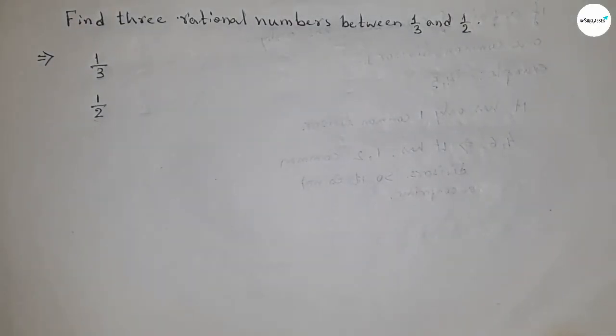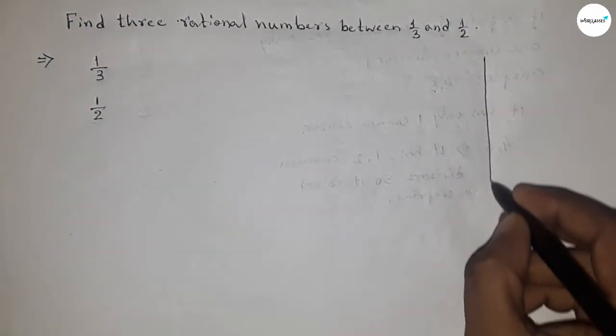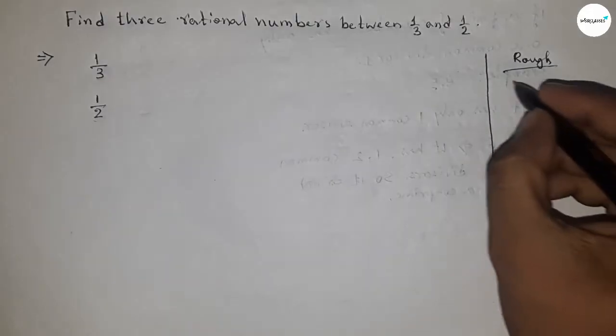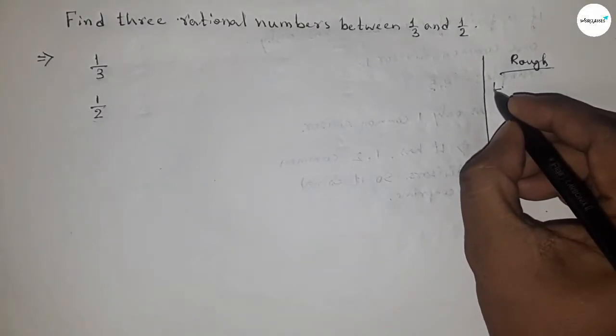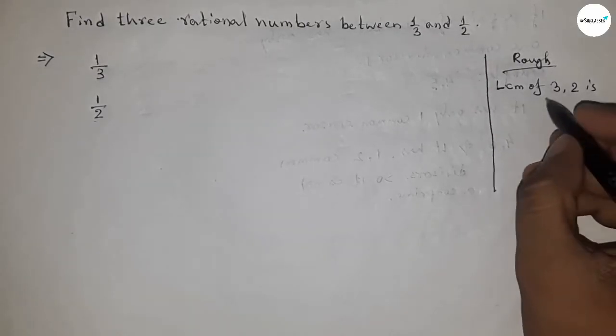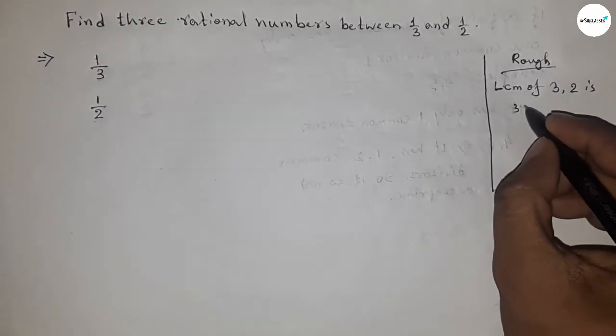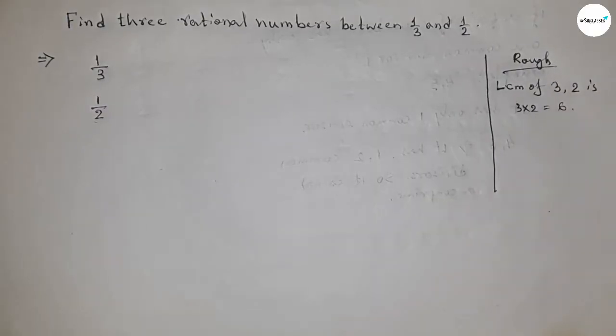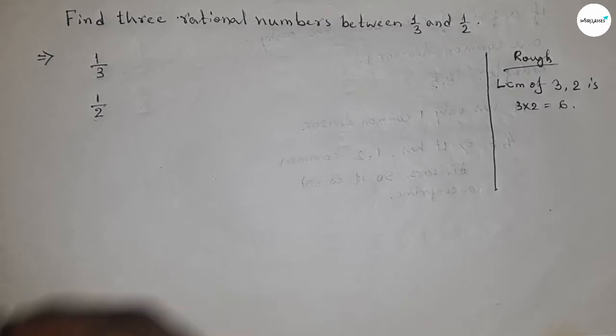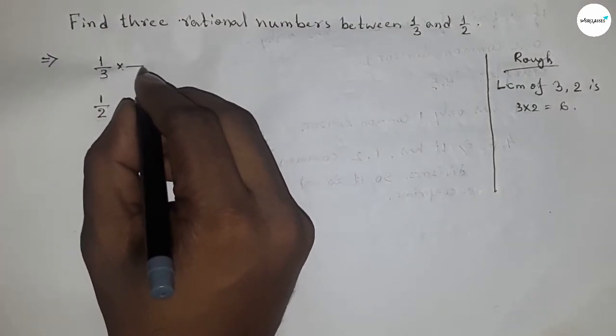Now, roughly discussing some calculation here. First we have to find out the LCM of 2 and 3. Since 2 and 3 are prime to each other, then their product will be LCM, so 2 into 3 equal to 6. Next we have to make the denominator of both rational numbers to become 6.